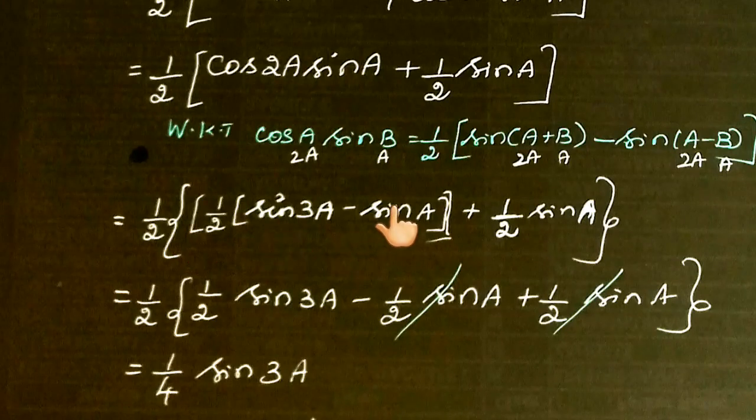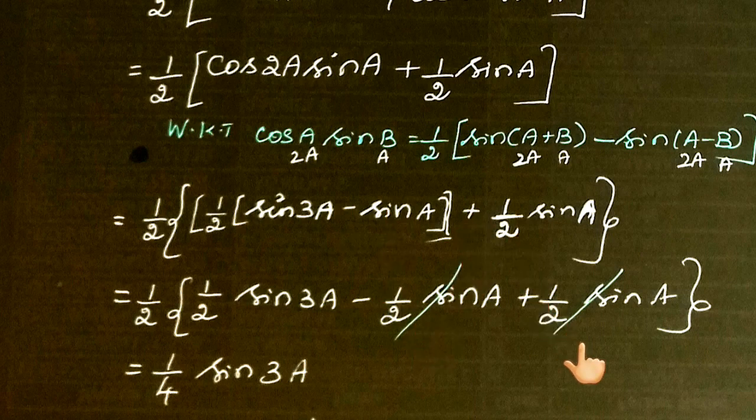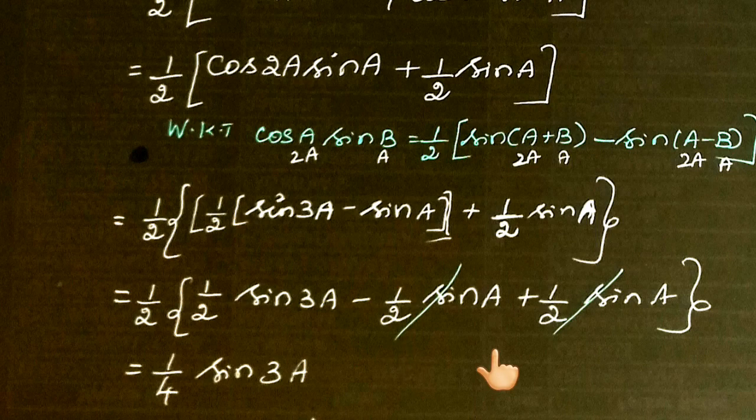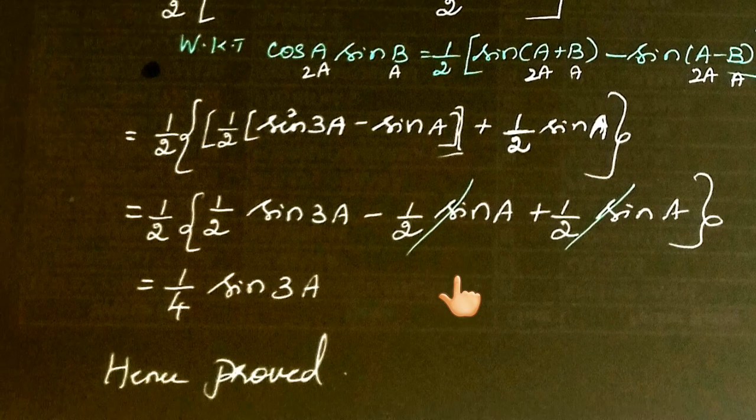Notice that -1/2 sin(A) and +1/2 sin(A) cancel out, leaving 1/2 × 1/2 sin(3A). Multiplying 1/2 into 1/2, we get 1/4 sin(3A).